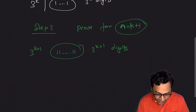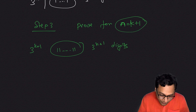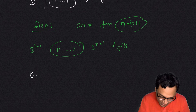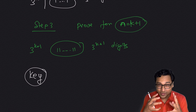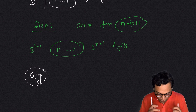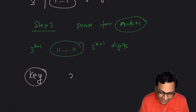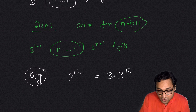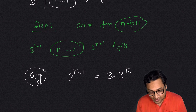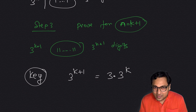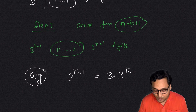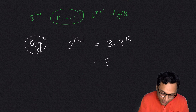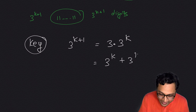The key observation — every problem has a magical key that opens it up — is this: 3 to the power k plus 1 is simply 3 times 3 to the power k. This is simple but very useful. You can add three copies of 3^k ones together to get 3^(k+1) ones.